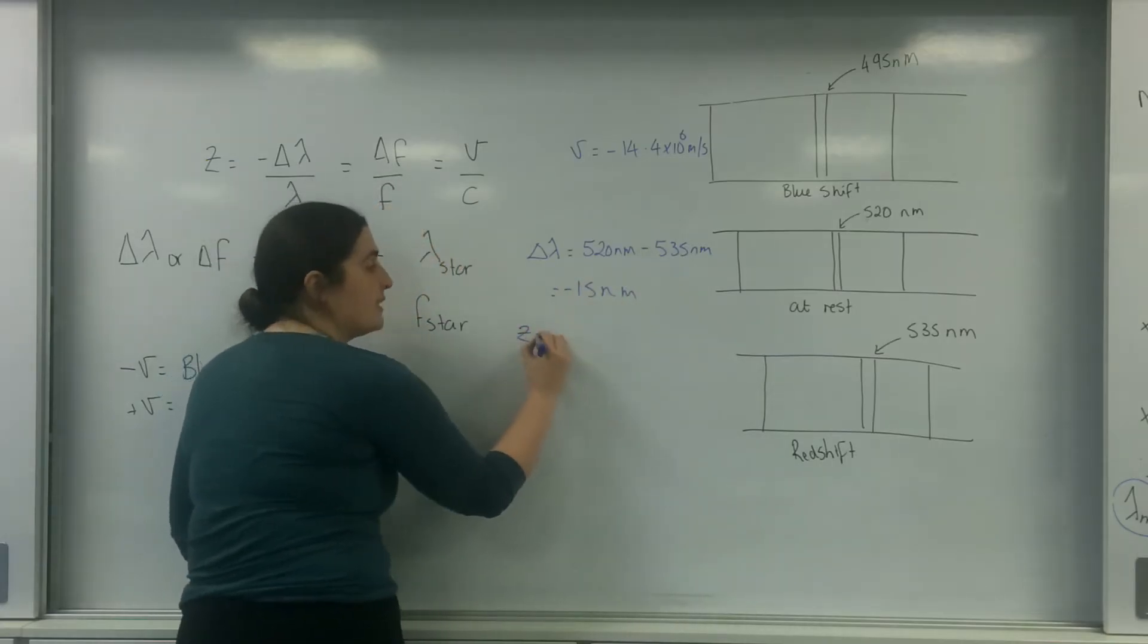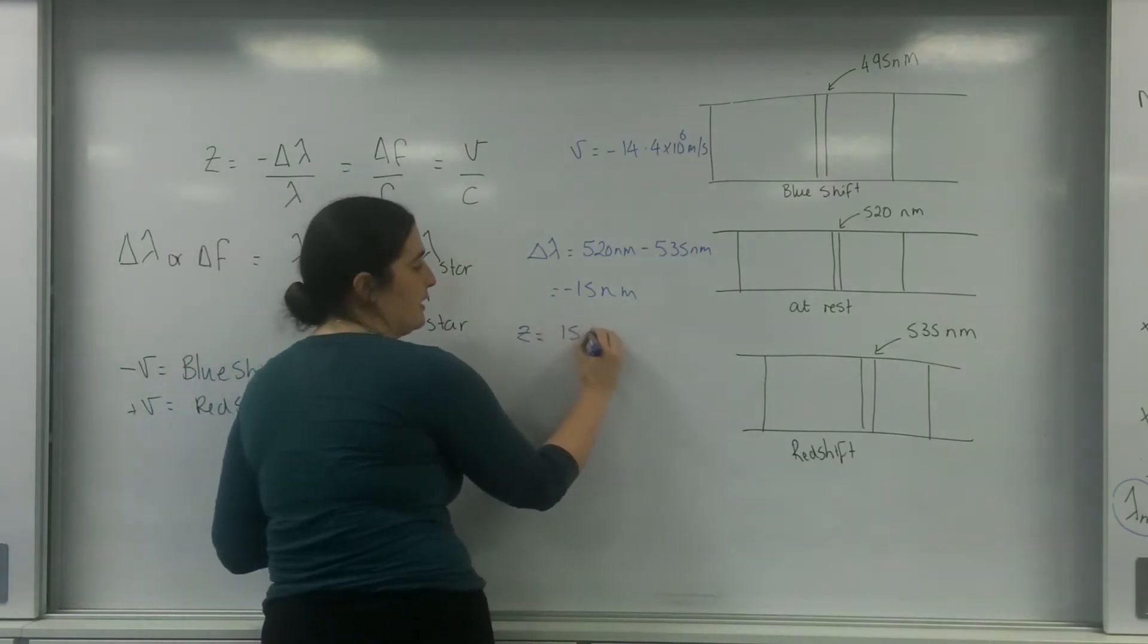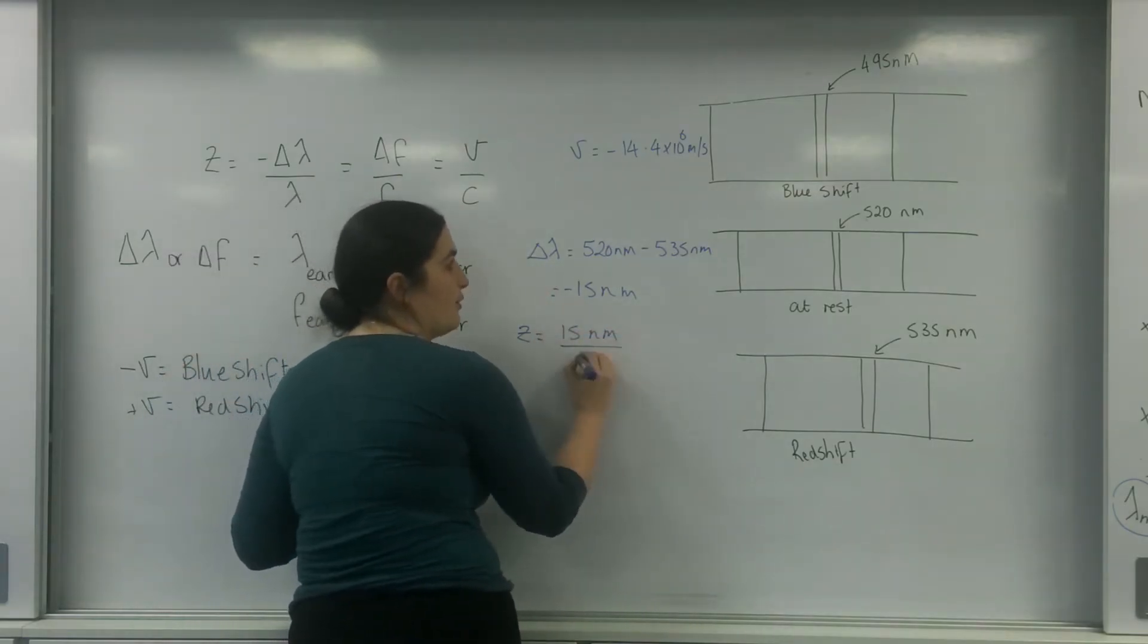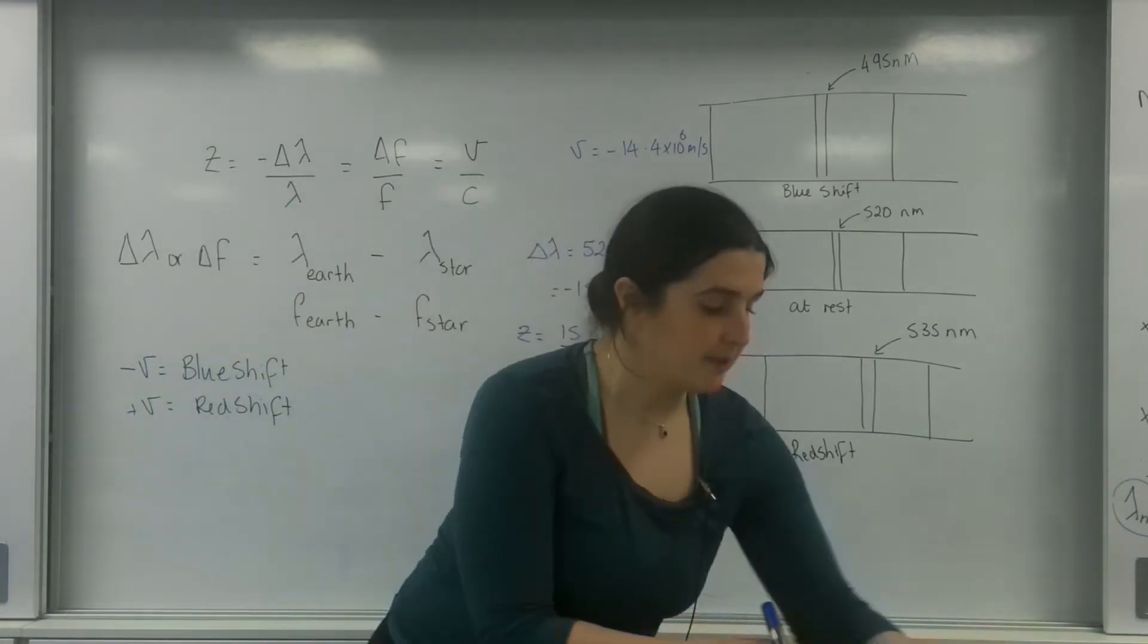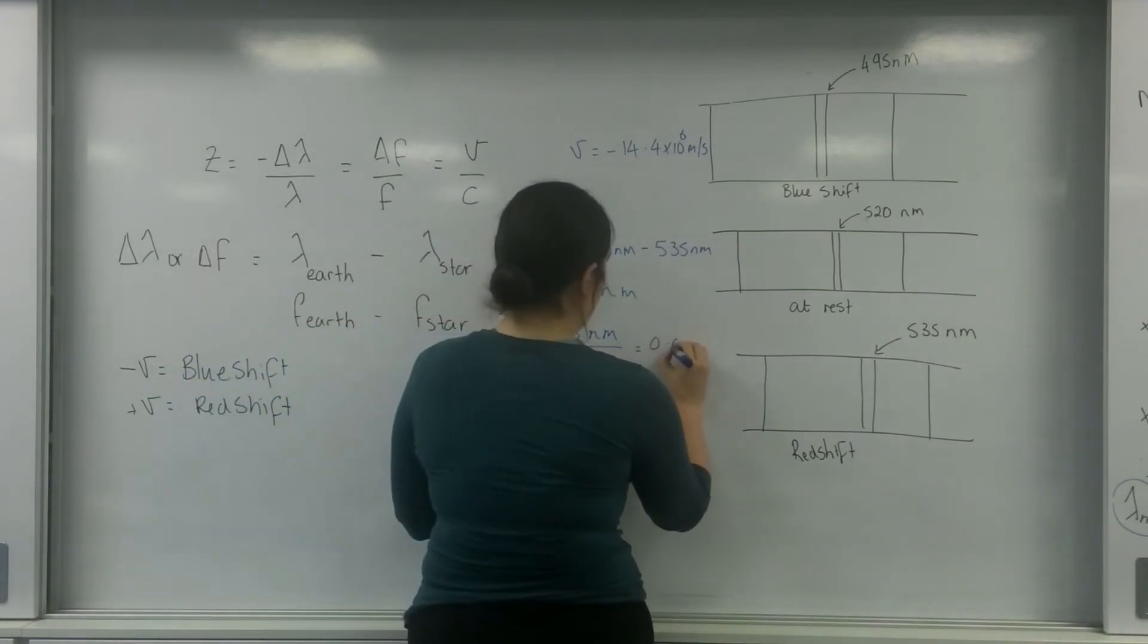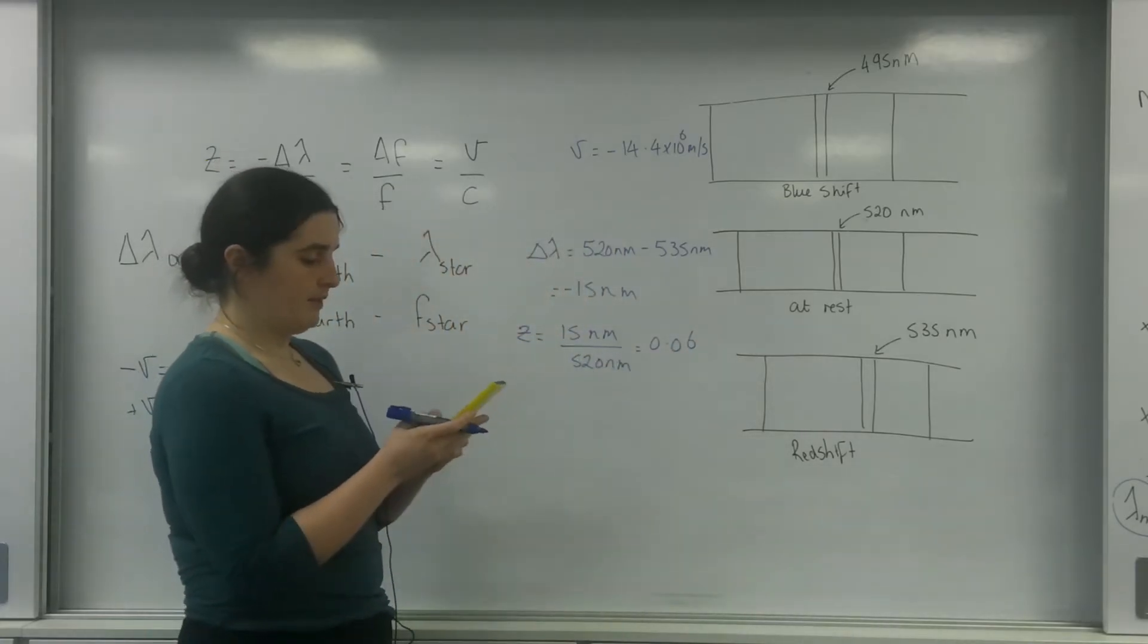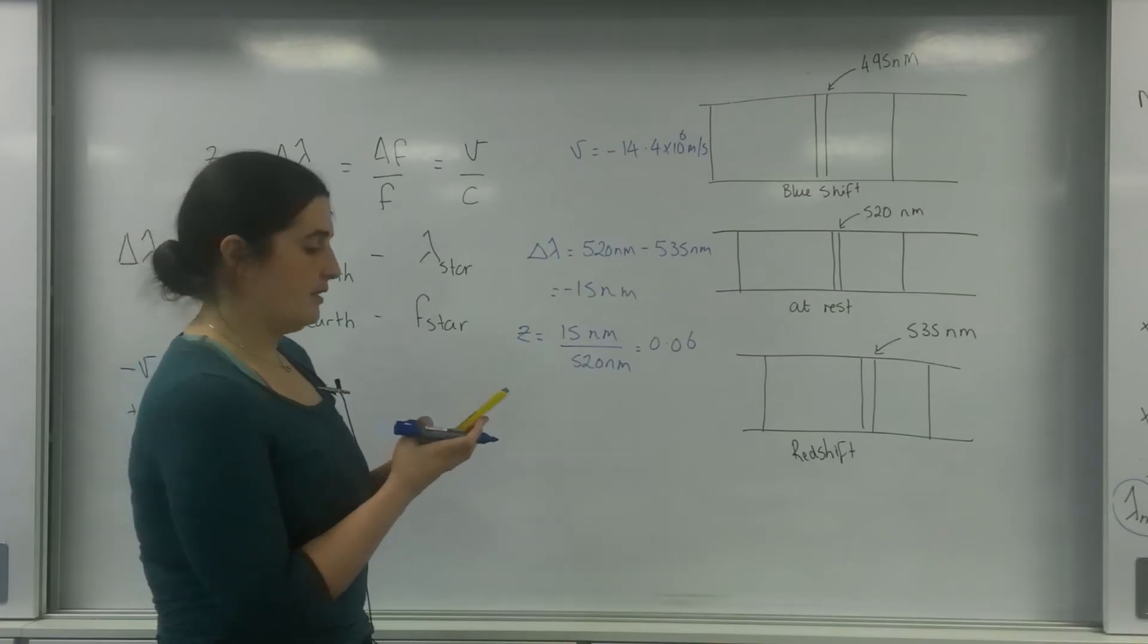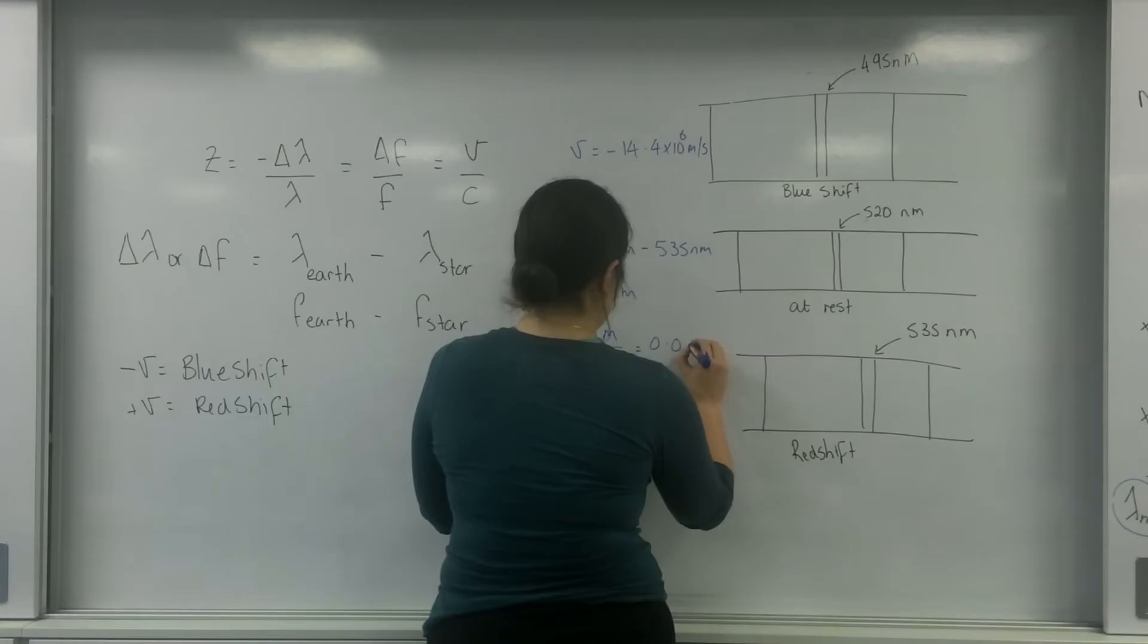And that Z is minus minus 15. So that's going to be 15 nanometers over 520 nanometers. 15 divided by 520, that's 0.029.